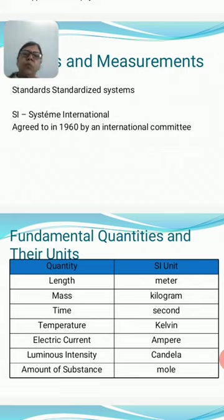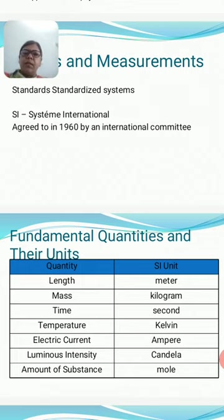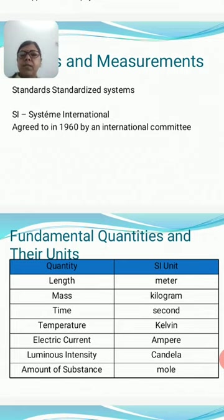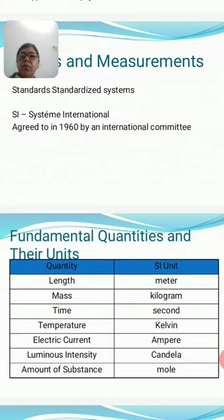What do we mean by fundamental quantities? First, let us understand what a quantity is. A quantity means anything which can be measured is called a physical quantity — for example, height, length, distance, time, electric current. If you measure a distance and say only '1,' it is not complete unless you say '1 meter,' '1 kilometer,' or '1 centimeter,' because the unit defines what you are talking about. Fundamental quantities are those that are independent — they do not depend upon other quantities. There are 7 fundamental quantities.